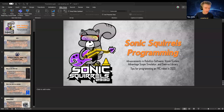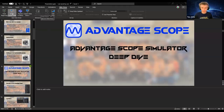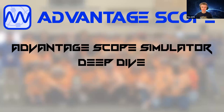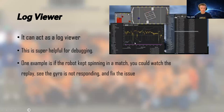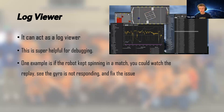The next part is AdvantageScope, and AdvantageScope is actually a game changer for FRC teams. It's a bit of an implementation process, but once you have it there are so many uses. Basically, AdvantageScope is the idea that you can log every single value flowing through your code — from motor temperatures to camera ambiguity. It has three primary functions: log replay, diagnostics, and simulation.